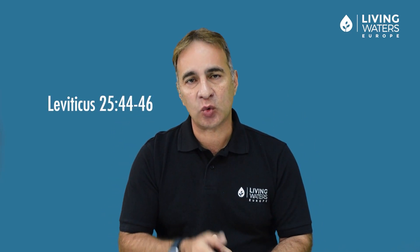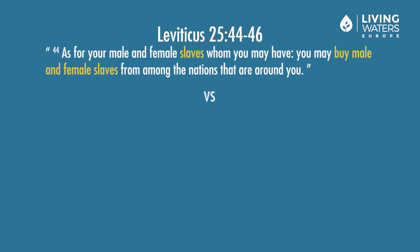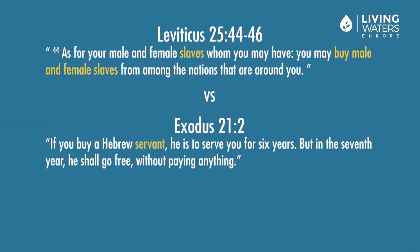What is Leviticus chapter 25 verses 44 to 46 really saying? Why is it so different from Hebrew slavery, and in comparison so much harsher? Does that mean God endorses slave traders when it comes to foreigners? Why does the Bible refer to Hebrews as servants and bond servants, but when it comes to foreigners it refers to them as slaves? Isn't that strange?